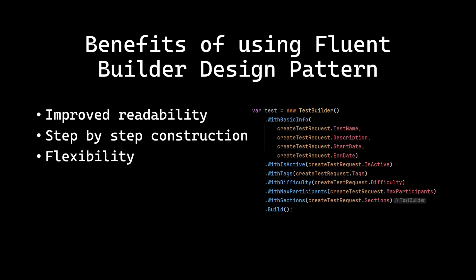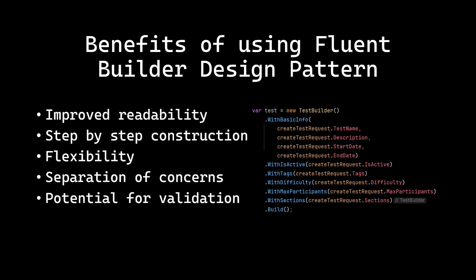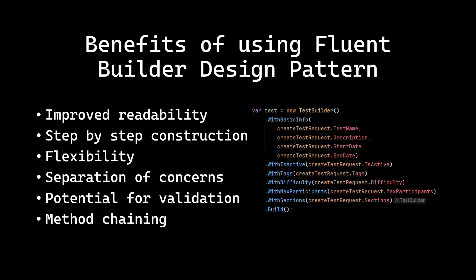Flexibility — it's very easy to add or omit optional parameters without creating multiple constructors or method overloads. Also, separation of concerns, so the construction logic is separated from the Test class itself, adhering to the Single Responsibility Principle from SOLID. Also, the potential for validation — each builder method can include validation logic ensuring the object is always in a valid state. And method chaining allows for a more natural, sentence-like structure when creating objects, while the builder encapsulates the complex construction process.